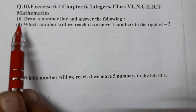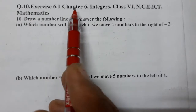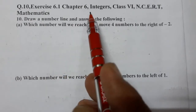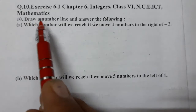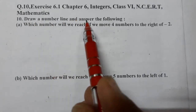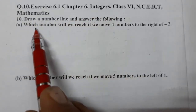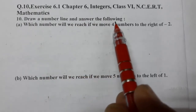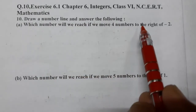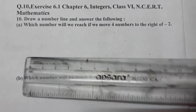Hello students, today we are going to do question number 10 of exercise 6.1, chapter 6 mathematics. We will draw a number line and answer the following questions. Which number will we reach if we move four numbers to the right of minus 2? So let's make the number line first.